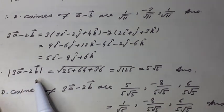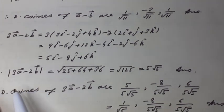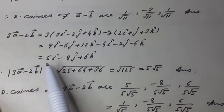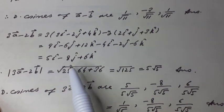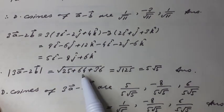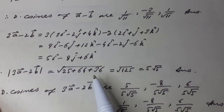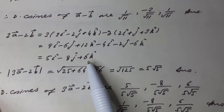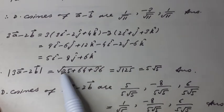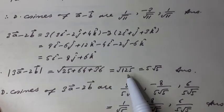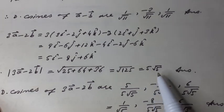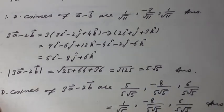Therefore, the magnitude of 3a vector minus 2b vector is equal to √(5² + (−8)² + 6²) = √(25 + 64 + 36) = √125 = 5√5. Answer.